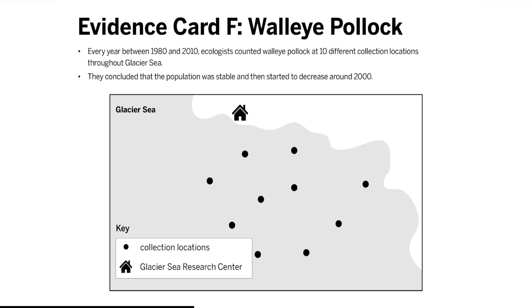Focusing on Claim 2: The size of the walleye pollock population changed. Evidence card E supports this claim directly. It shows that the walleye pollock population decreased. The walleye pollock and the moon jellies both eat zooplankton, meaning the two populations compete for food.